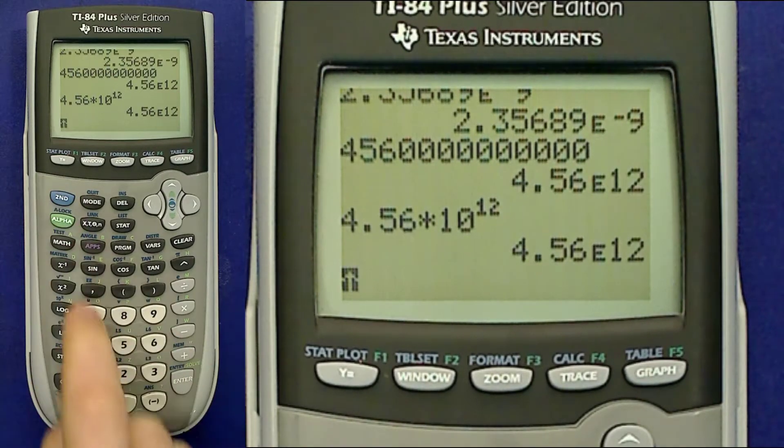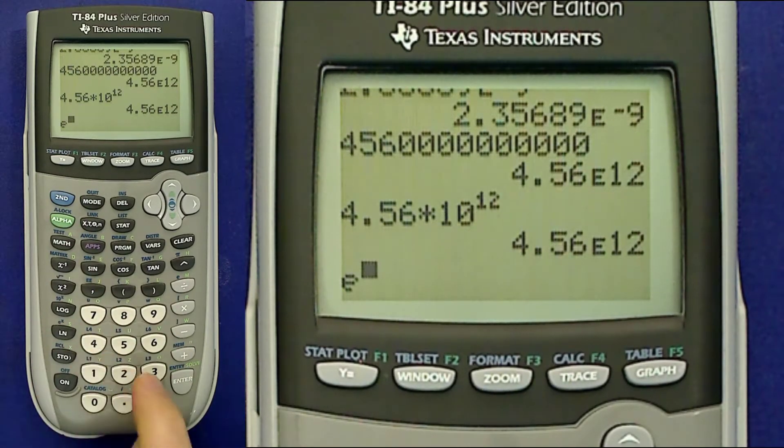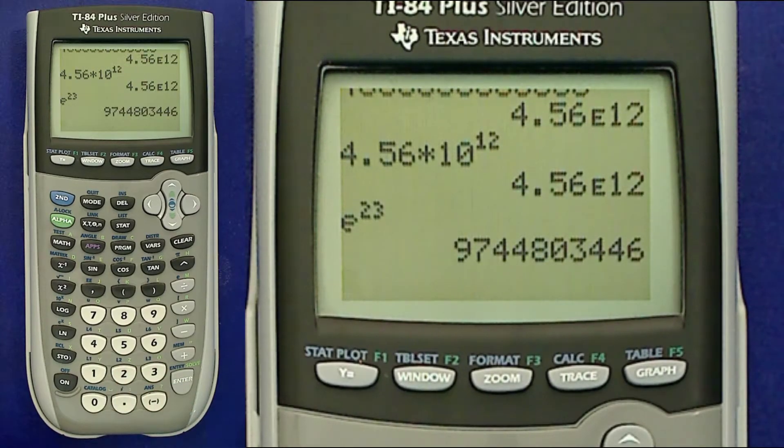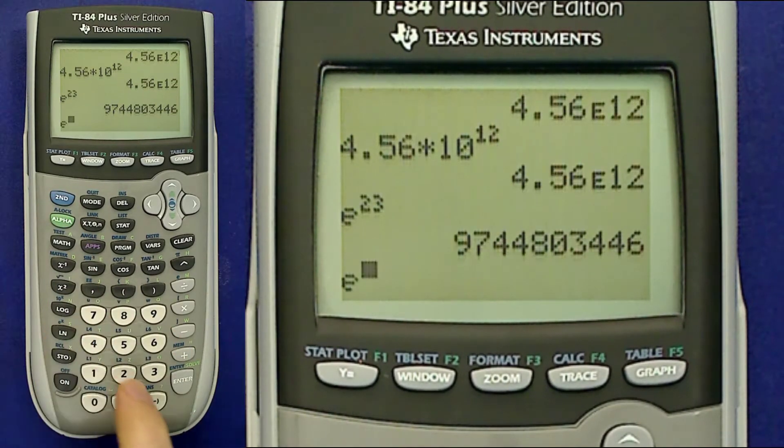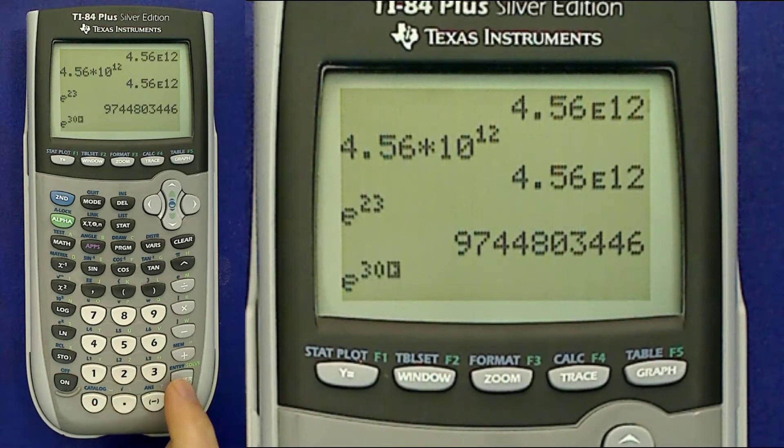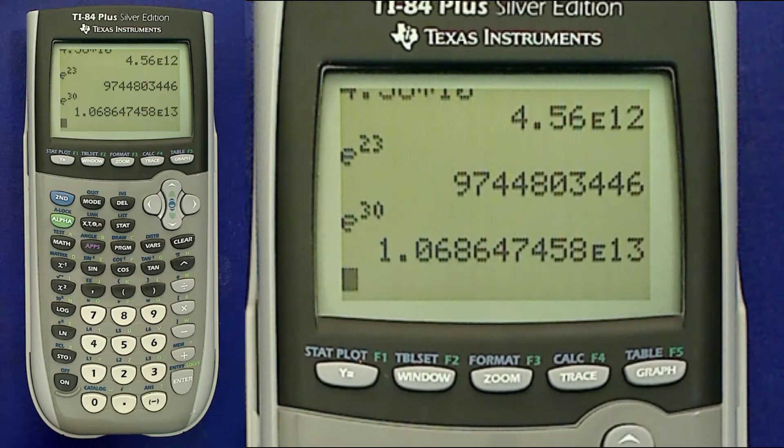That kind of number shows up a lot when you're doing exponential calculations. So there you can see e to the 23 is a big number, e to the 30 is an even bigger number, and the calculator expresses it in scientific notation as one point something times 10 to the 13th.